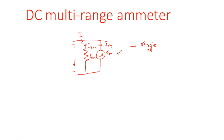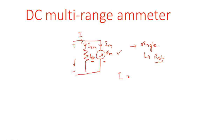How can we say this type of ammeter can measure only a single range? Because the range is determined by the shunt resistance Rsh. If you are using one shunt resistance, that one shunt resistance will decide one range. If you are using two shunt resistors, that will give two different ranges, because based on Rsh we control the amount of current flowing through the meter. The total current i is equal to ish plus im.